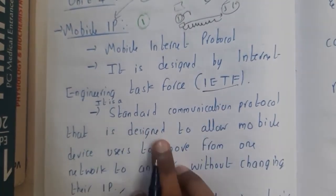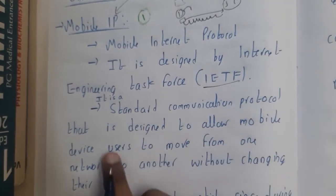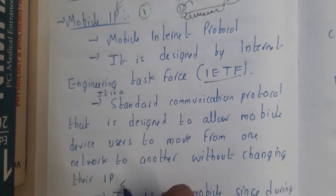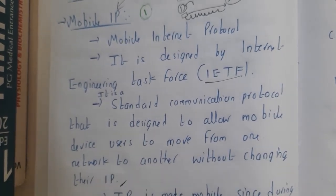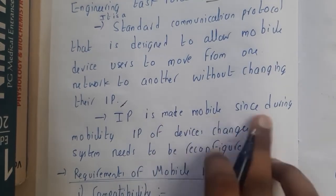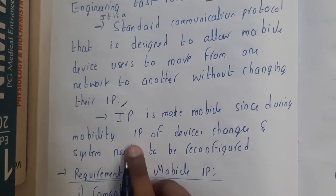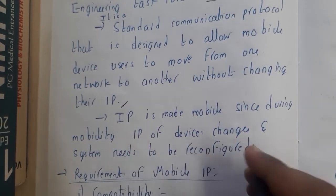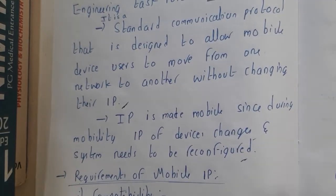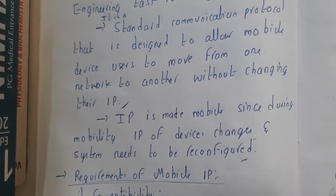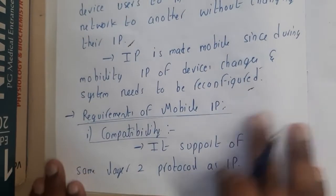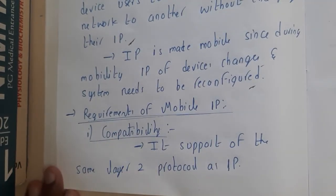To avoid that, they introduced Mobile IP. Mobile IP is Mobile Internet Protocol, designed by internet engineers at the IETF — the Internet Engineering Task Force. It is a standard communication protocol designed to allow mobile device users to move from one network to another without changing their IP. IP was made mobile because during mobility the IP of devices was changing and the system needed to be reconfigured.